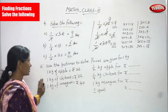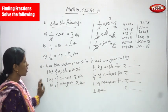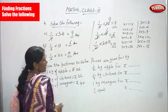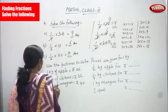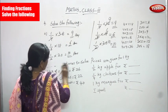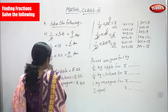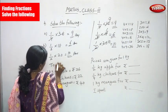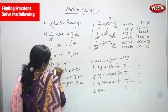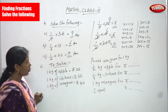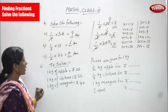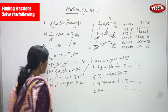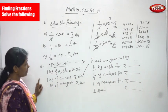Now we are going to see a word problem. Prices are given for 1 kg. I didn't show the pictures, but you can imagine apples, chikus, and mangoes. 1 kg of apple is rupees 26.